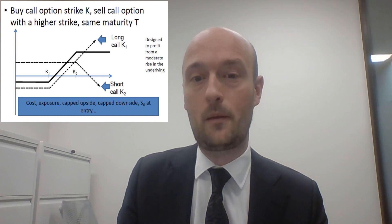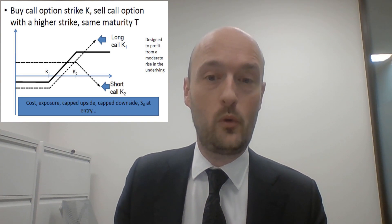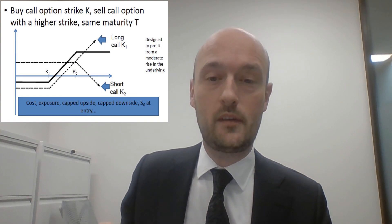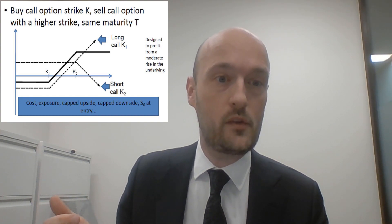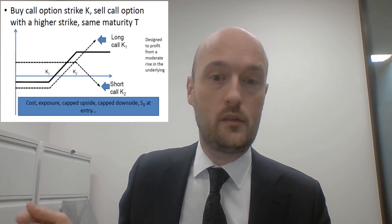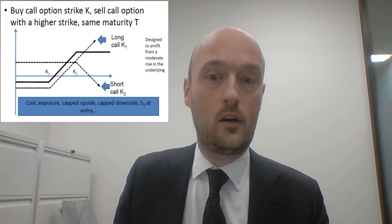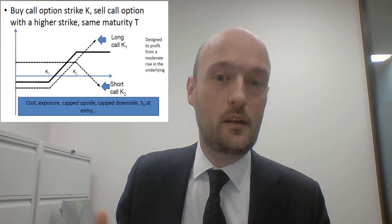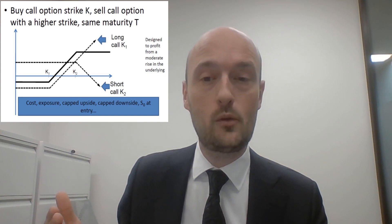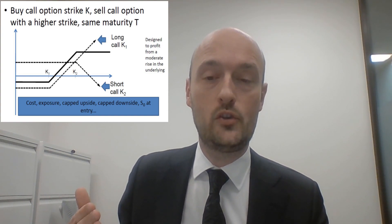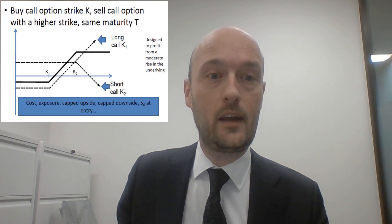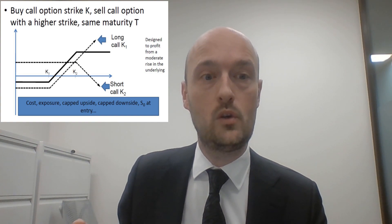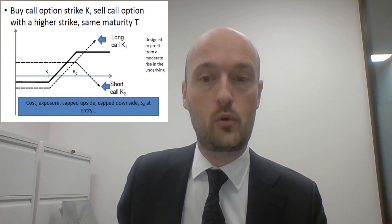Let's look at the diagram. We have a call option that we've bought with a strike of K1, and as you can see from the heavy black line — which is the payoff of the spread, rather than the dashed lines which are the payoffs of the individual options — the spread starts to go up just like being long a call option with a strike of K1. It continues with that payoff until we hit strike K2, and at K2 any incremental gain we're making in our K1 call has been given up — we're losing it in the second call we've sold with a strike price of K2.